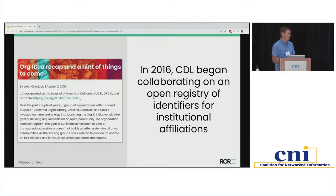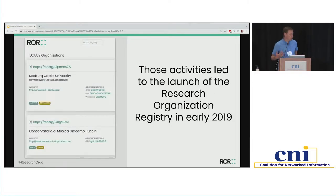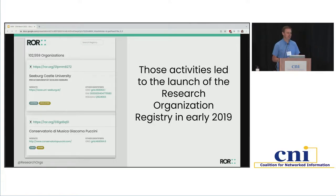We brought together a group of over 17 organizations, each with their own schema for organizational identifiers, and asked: how do we tackle the problem that even with all these identifiers for outputs and people, we still don't have a clean way of tracking affiliations to find things from UC? One of the ways we brought together the community was at CNI, where we presented with identifier schema organizations. And ultimately what came of it was the launch of ROR.